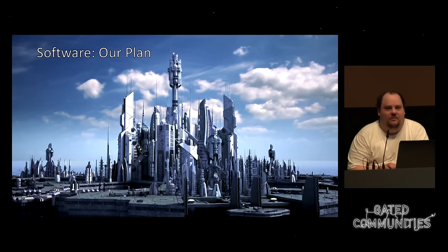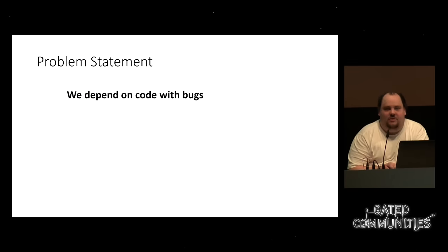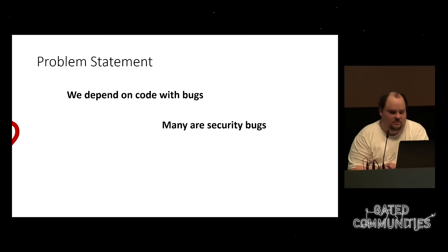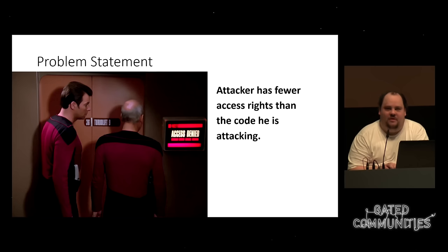The problem I'm trying to solve: when you plan software you think of it one way, but when it's written it's more complex. We depend on lots of code with bugs in our daily lives, and many of those bugs are security bugs. If someone tries to attack something, it's usually something that has more access rights than the attacker in the first place.